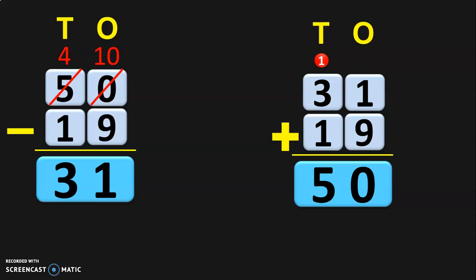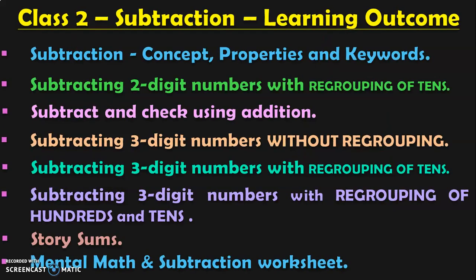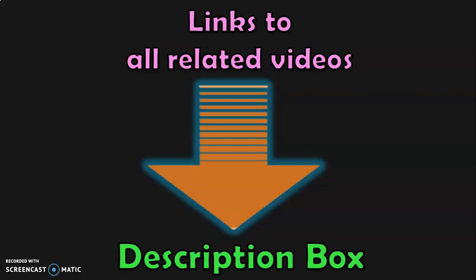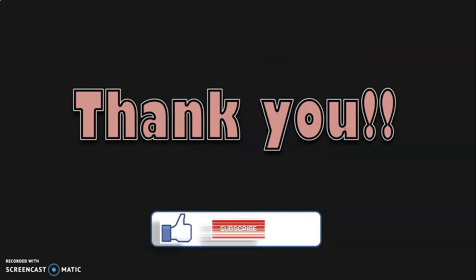Dear viewers, hope you have clearly understood how to subtract and check the answer by addition. These are all the learning outcomes in class 2 under the subtraction concept. In the first video, we covered subtraction concept properties and keywords. In this second video, I covered subtracting two-digit numbers with regrouping of tens and checking by addition. In upcoming videos, we will cover subtracting three-digit numbers without regrouping, then regrouping the tens and hundreds place in three-digit numbers, story sums, mental math, and a subtraction worksheet. Links to all related videos will be in the description box below. Thank you for watching — if you like the quality of my video, give a thumbs up, subscribe to my channel, and click the bell button for regular notifications.